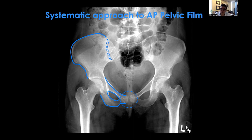I look at the anterior portion of the sacroiliac joint, comparing it to the contralateral side — if you look carefully, you can often see the posterior aspect as well. Then I look at the sacrum. Looking at the neuroforamina in particular is the way to pick up a subtle injury. Oftentimes there's a little wrinkle or buckle through one of the foramina, and that's going to be the tip-off that there's a zone one or two sacral injury.